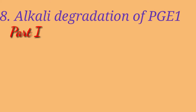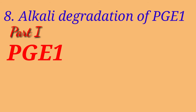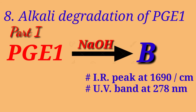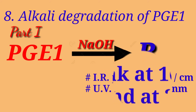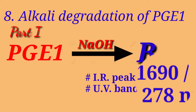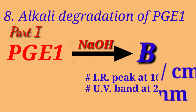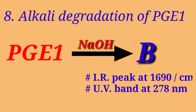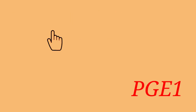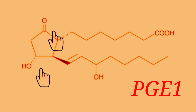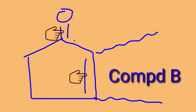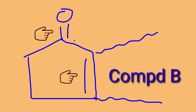When PGE1 was allowed to react with hydroxylamine it produces compound B with a UV band at 278 nm and an IR peak at 1690 cm⁻¹, which indicates the presence of a beta-hydroxy keto group in PGE1. It also indicates a conjugated double bond with the keto group.